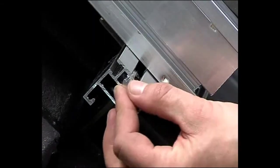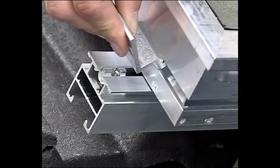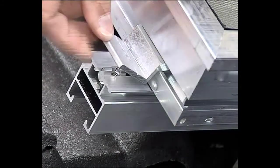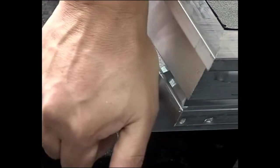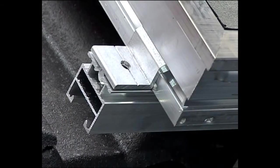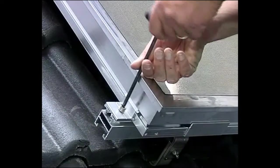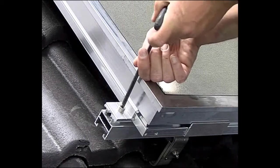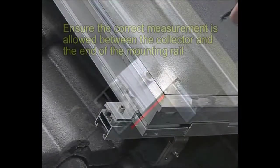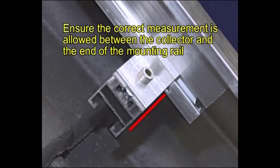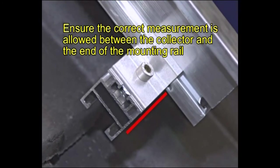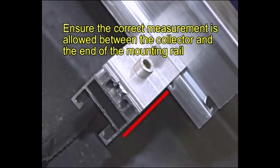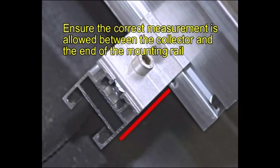The collectors are then fixed to the rails by means of a simple locking system. An aluminum angle piece is locked into the side frame of the collector, snapped into place, and then, using the anchor block and bolt provided, is fixed to the rail. Particular attention is needed to ensure that the correct measurement is allowed between the collector and the end of the mounting rail in order for the panels to fit correctly and firmly to the rails.